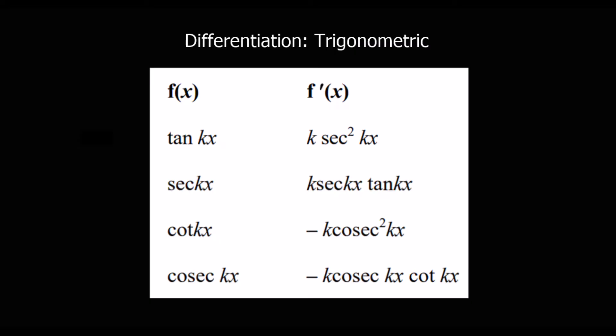The four trigonometric derivatives are: if y equals tan x, then dy/dx is sec squared x. If y equals sec x, then dy/dx is sec x tan x. If y equals cot x, then dy/dx is minus cosec squared x. And if y equals cosec x, then dy/dx is minus cosec x cot x.